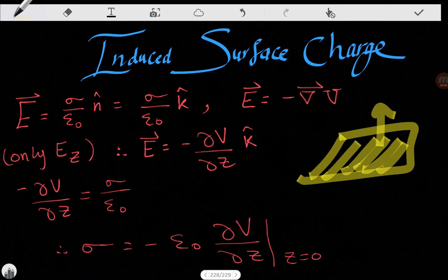Okay, and we know that electric field is minus the gradient of the potential. Also, we know that just above the conductor, only perpendicular components of the electric field exist.